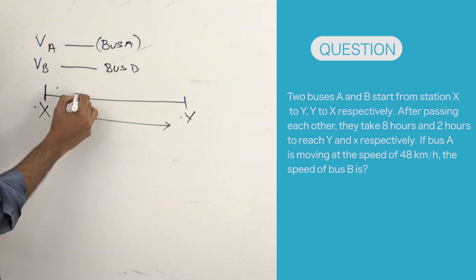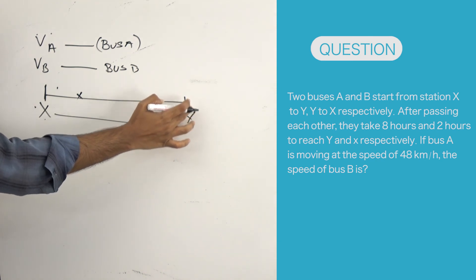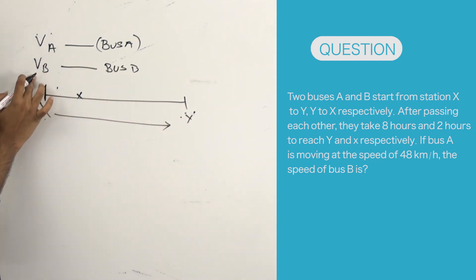They met at a point closer to X because bus A is taking 8 hours to reach point Y, whereas bus B is taking just 2 hours to reach point X.